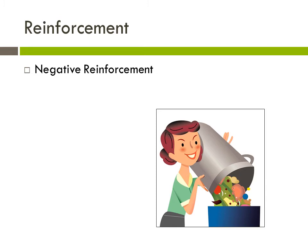Another example is the buzzing car seatbelt. When you get inside a new car and don't put your seatbelt on, the buzzer beeps at you. If you want it to stop, you put on your seatbelt. Sometimes it's easy to get positive and negative reinforcement mixed up because it all depends on the point of view of what's going on and who's in the scenario.